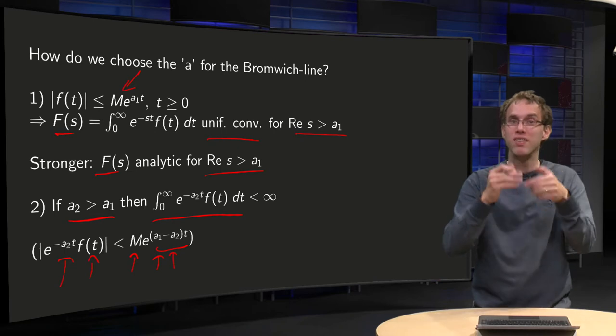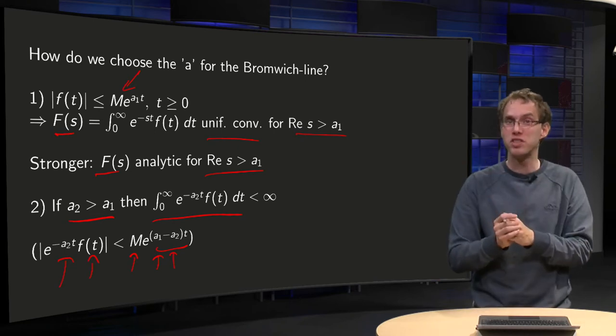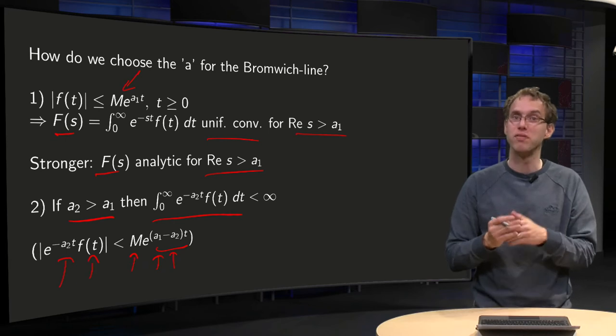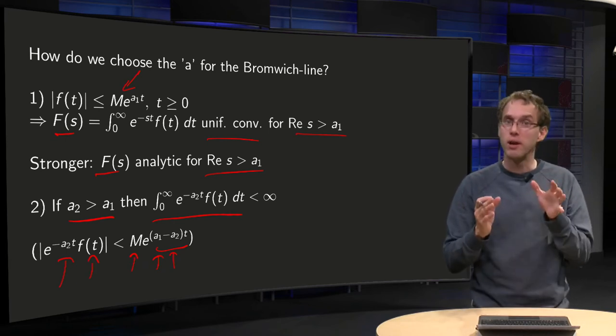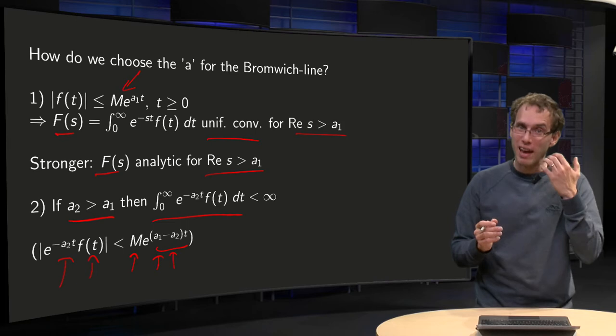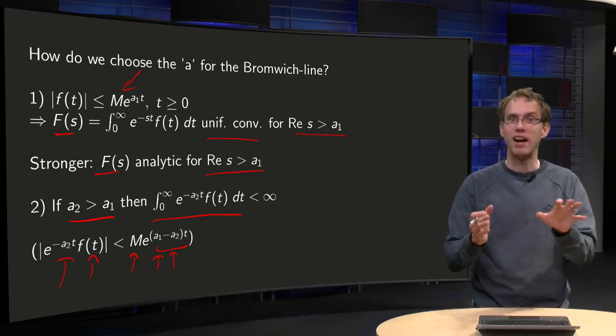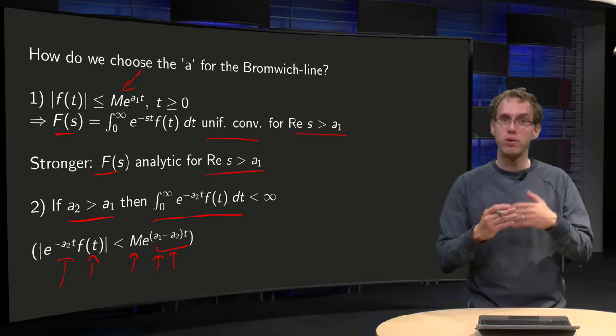Your exponent is a negative number in front of the t. And if you integrate that one, you will go down to zero fast enough. The integral will exist. So if you pick your a₂ bigger than your a₁, you are fine because then you satisfy all criteria.